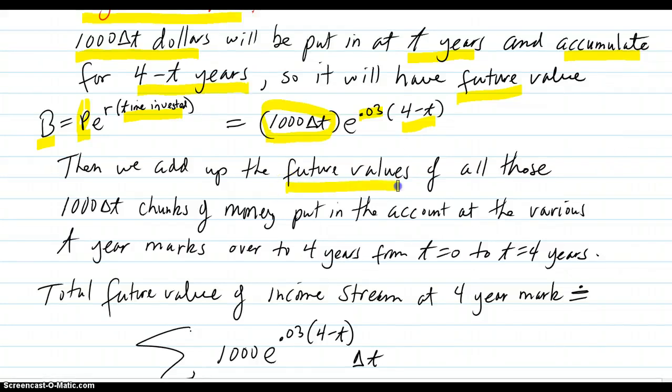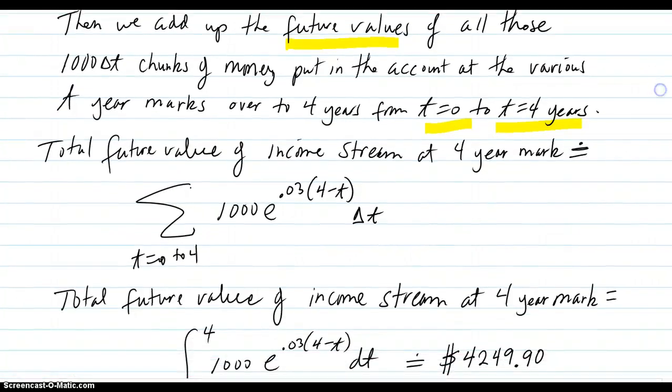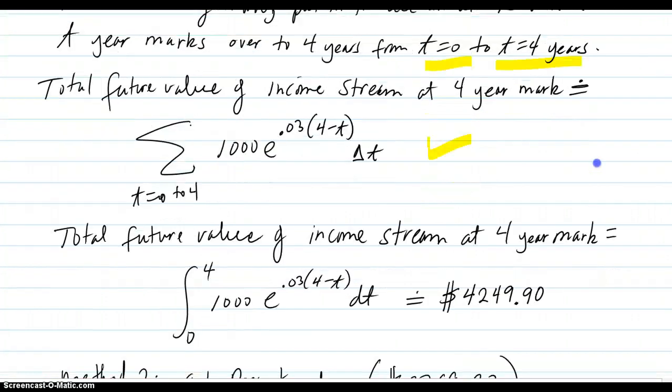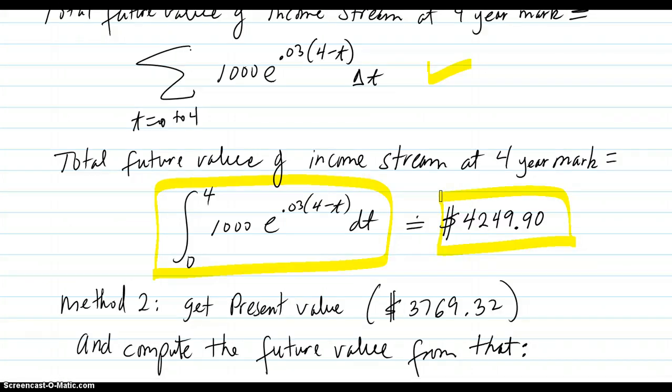Then you add up all those future values for all the possible T values as T goes from zero to four years. Your total future value of the income stream at the four year mark will be this sum, and then the integral, it'll be exactly this. Evaluate that with Simpson 200 and got this. So the whole business profit will be worth $4,249.90 at the four year mark.